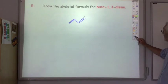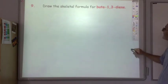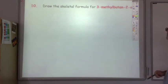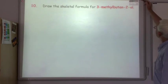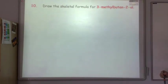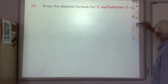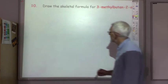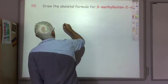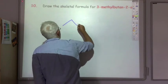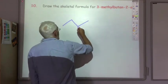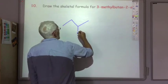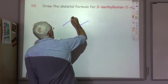And finally, 3-methylbutan-2-ol. We put in our butane chain: one, two, three, four. On the second carbon we've got an OH group, and on the third carbon we've got a methyl group. So there's 3-methylbutan-2-ol.